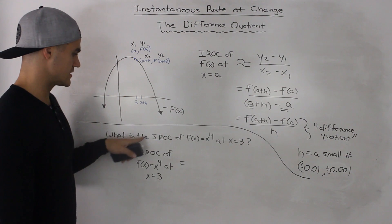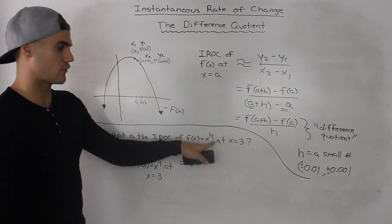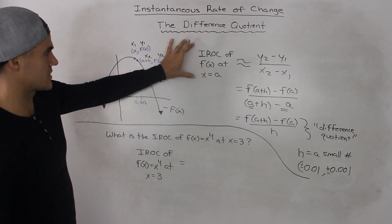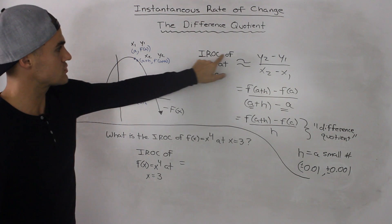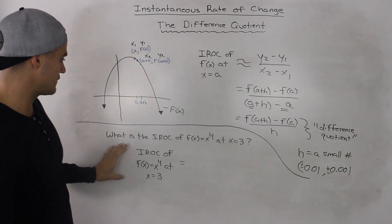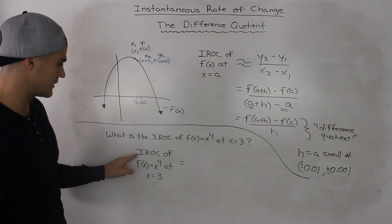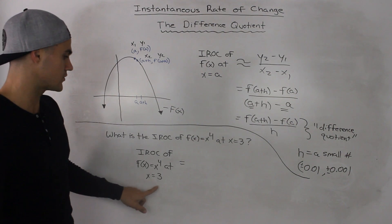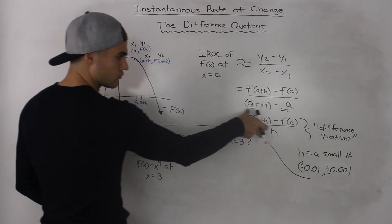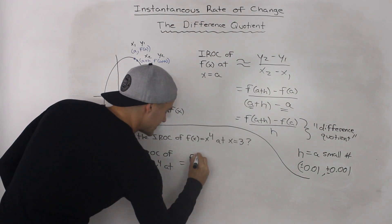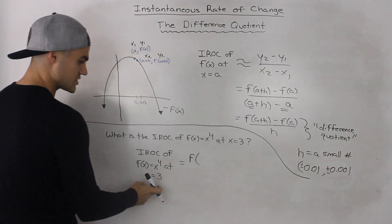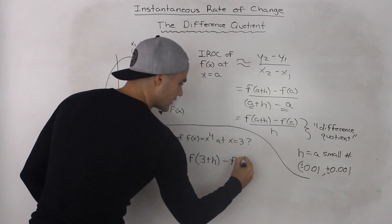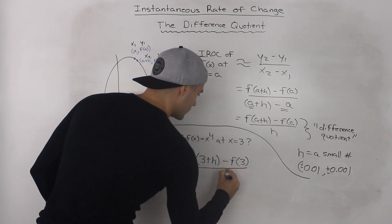For example, if you're asked what is the instantaneous rate of change of f of x equals x to the power of 4 at x equals 3, how would we solve that using the difference quotient? Our a value is 3 in this case. So if we rewrite the difference quotient, instead of f of a plus h, since a is 3, we would have f of 3 plus h minus f of 3, all over h.